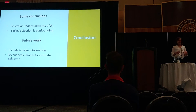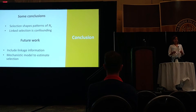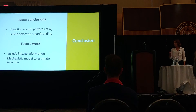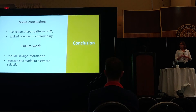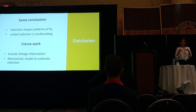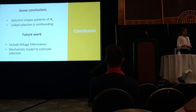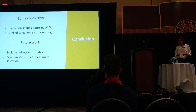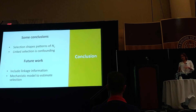So future work — well, there is plenty to do. Our idea really is to incorporate some linkage information so that we can actually account for patterns of varying Ne, or a combination thereof. But the long-term goal here is really to move on to developing a fully Bayesian model to actually estimate selection parameters, which would be ideal, and potentially actually estimate the effective population size directly from this model.